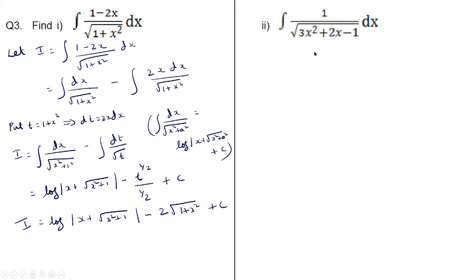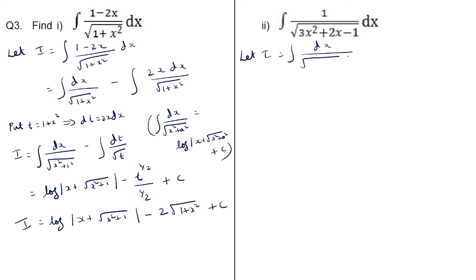Moving on to the next question: integral of 1 by root of (3x squared plus 2x minus 1) dx. Here we have to complete the square. Let i equal integral dx by root of (3x squared plus 2x minus 1).